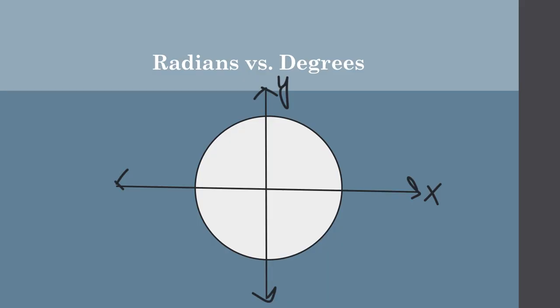So what we're going to talk about is radians, this new thing, and compare them to degrees. We know that degrees — a full circle — we could start here at zero degrees because you're not making an angle. You can keep going around: 90 degrees, 180 degrees or half a circle, 270 degrees, and then back to a full circle is 360. So a full circle is 360 degrees, as we've learned in geometry.